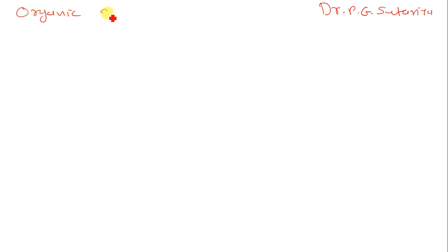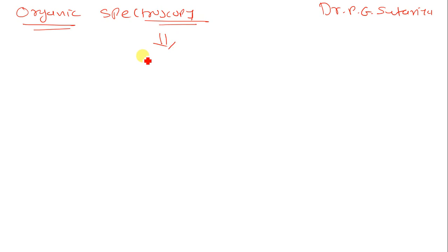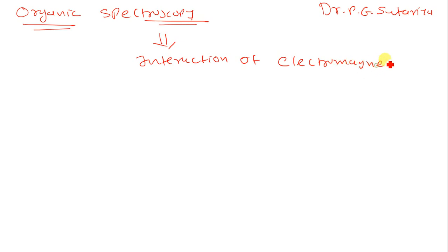In our previous lecture, we started a new topic that is Organic Spectroscopy. Now let us understand what we mean by Organic Spectroscopy. As we have seen earlier, spectroscopy is the interaction of Electromagnetic Radiation with the Matter.